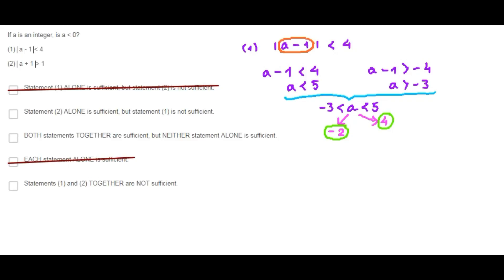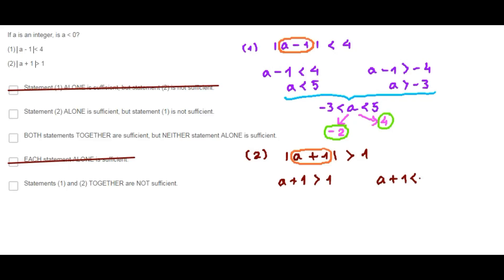From statement 2 alone, the absolute value of a plus 1 is greater than 1. Is statement 2 alone sufficient to answer the question? Since we don't know the sign inside the absolute value, we have two different options: a plus 1 is greater than 1, or a plus 1 is less than negative 1.